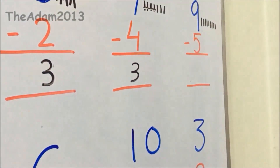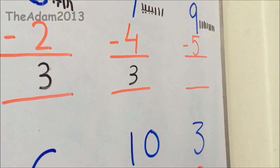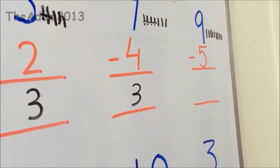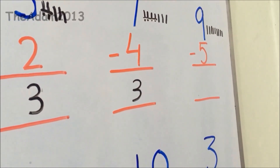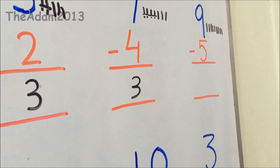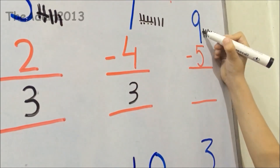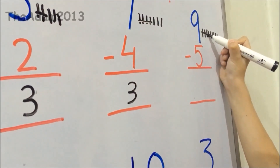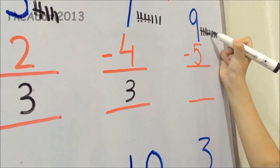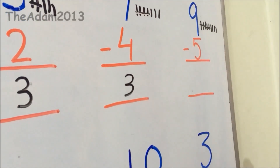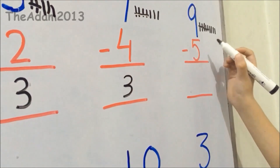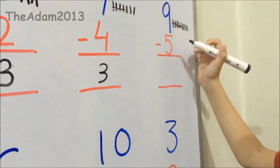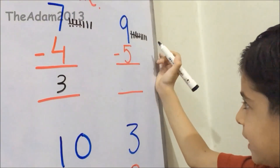Friends, 9 lines we have to write here — 1, 2, 3, 4, 5. Friends, you will cut 5 lines. And you will write the answer here.